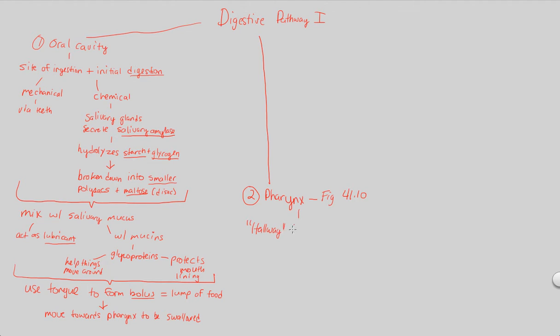Specifically, the pharynx is the hallway to both the digestive system, meaning the continuation of the next compartment, and also the respiratory system. There are two paths that can be taken by whatever's entering the pharynx. Either you can continue on to the digestive system or enter the respiratory system.